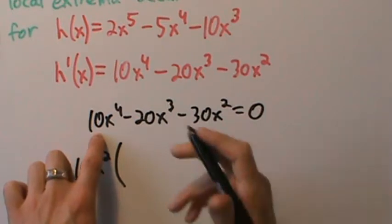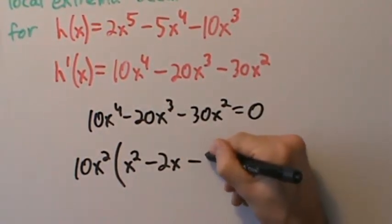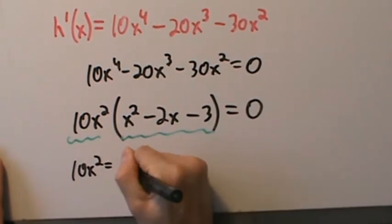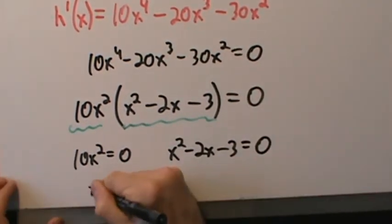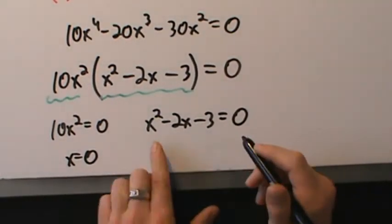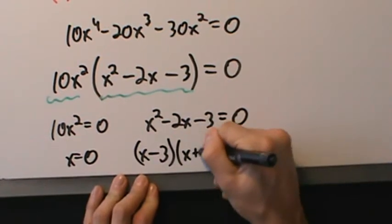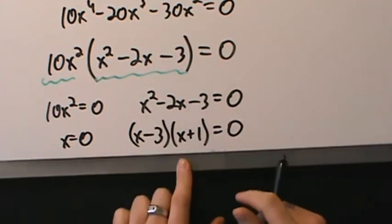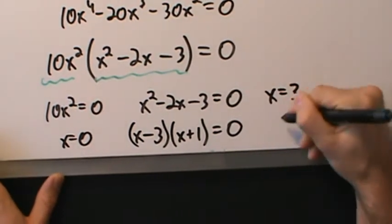Pulling out 10x squared leaves x squared minus 2x minus 3. So either 10x squared equals zero — meaning x equals zero — or x squared minus 2x minus 3 equals zero. That factors into x minus 3 times x plus 1, giving x equals 3 or x equals negative 1.